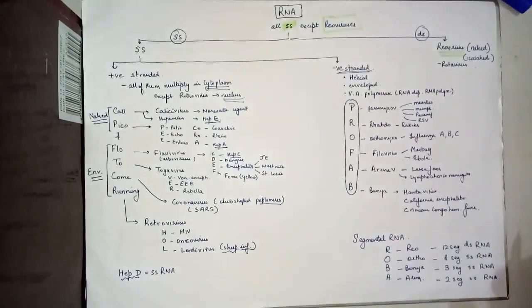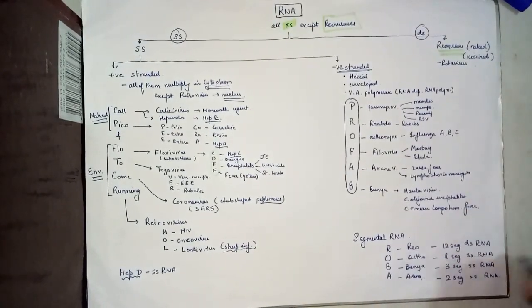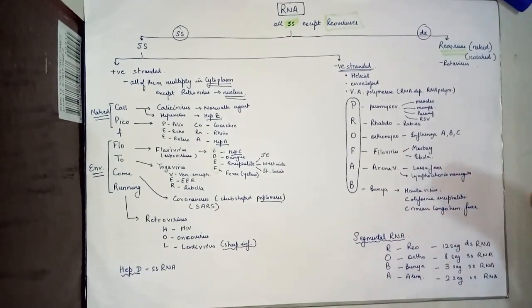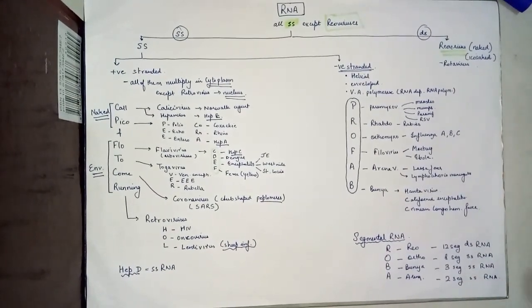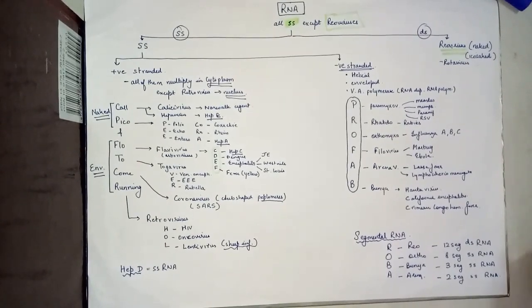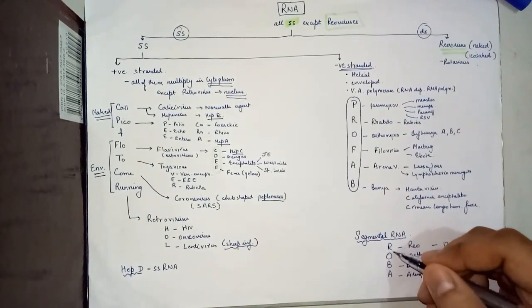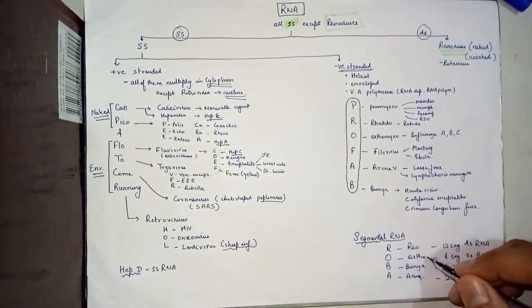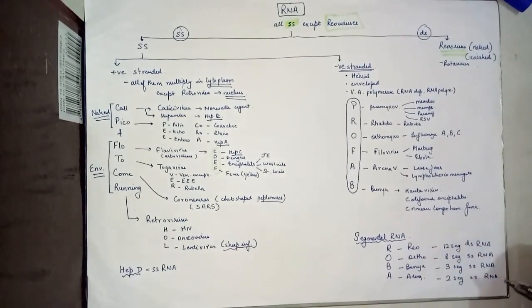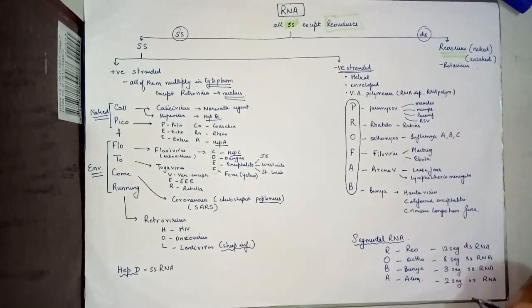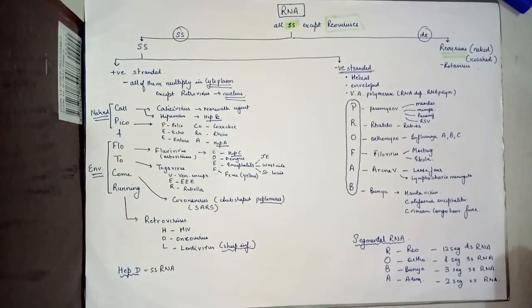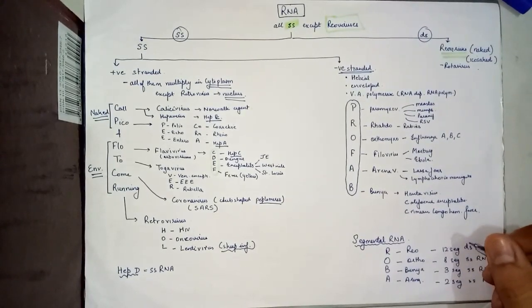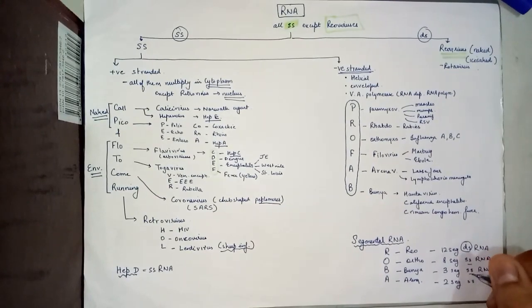This is basically the entire classification of RNA viruses. One important thing to note is we have a couple of segmental RNA viruses, which means that their genome is broken up into segments. You can remember this by memorizing ROBA: reo virus, orthomyxovirus, bunyavirus, and arenaviruses. Respectively they have 12, 8, 3, and 2 segments of RNA, and the only double stranded as we talked about is reo virus. Rest all of them are single stranded.